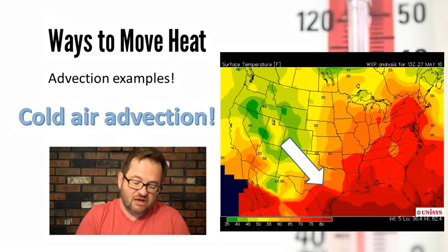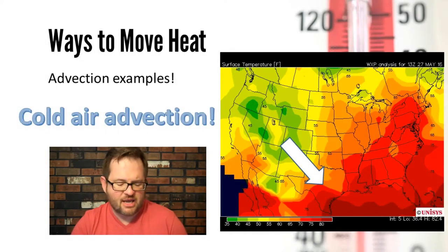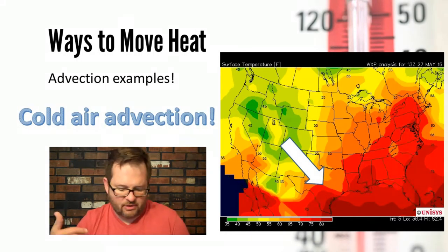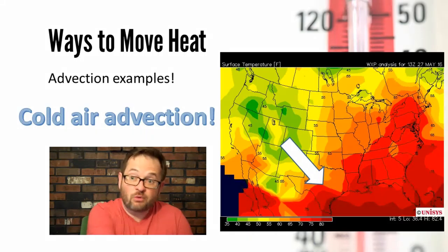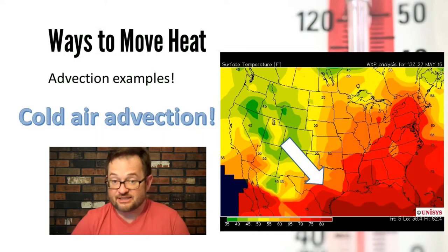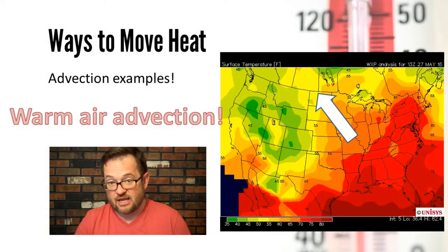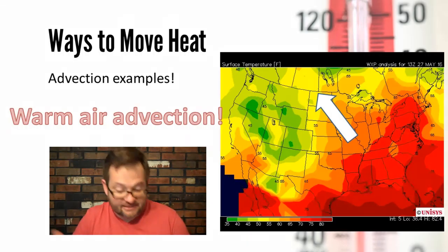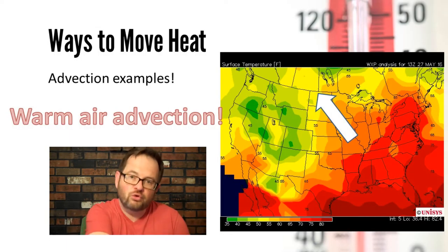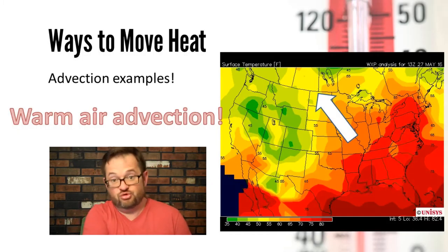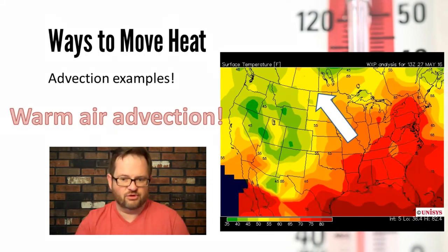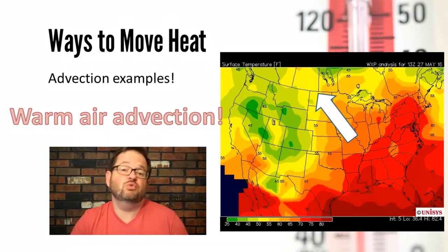Advection can be either cold or warm. Looking at a map with temperatures plotted, if cold air over the Rockies is moving south and east, displacing warmer air and putting colder air in its place, that's cold air advection. Conversely, if warmer air over the Midwest and southeast United States moves north and west, pushing colder air out of its way, that is warm air advection — a very efficient way of moving heat from a warm place to a cold place. Warm and cold air advection will be a big part of the story when we learn about warm fronts and cold fronts.